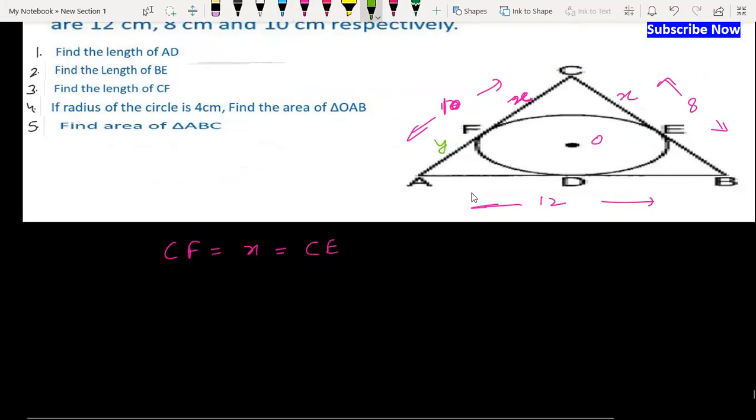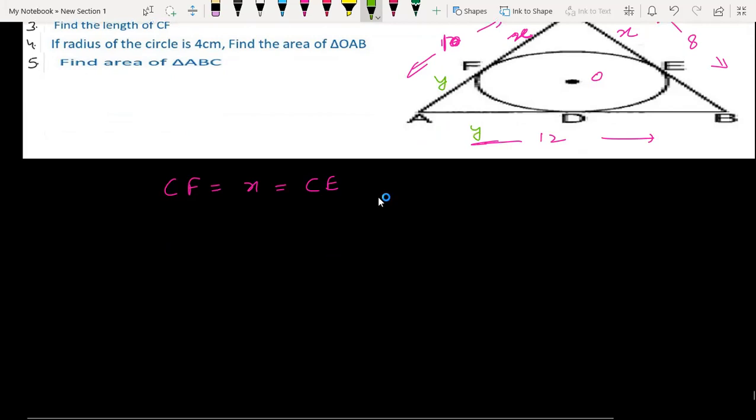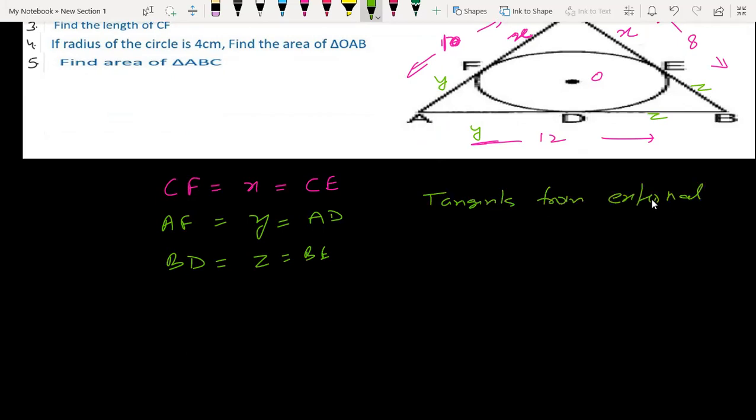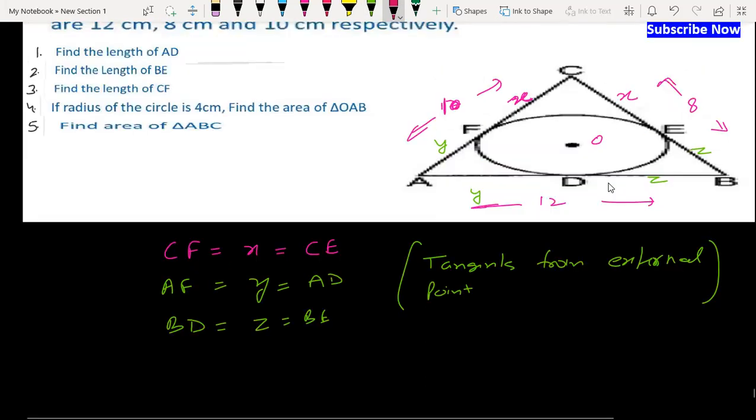Tangent from external point. Let's take y, so AF and AD are y. BD is z. Clearly, tangents from external point are equal in length.